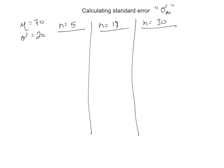In this video I'm going to show you how to calculate standard error using several different sample sizes. For all of them we're going to use a mu, a population average of 70, with a standard deviation of 20.